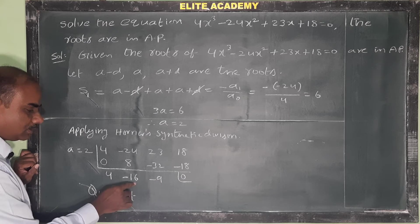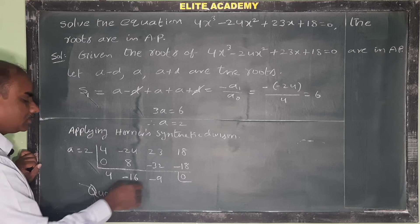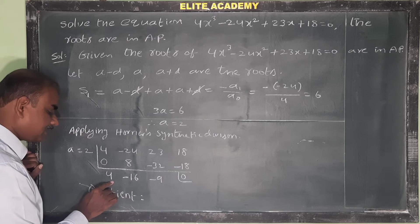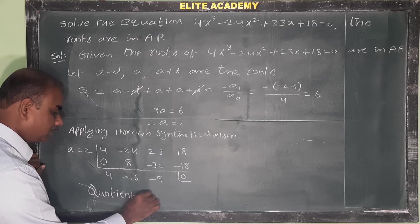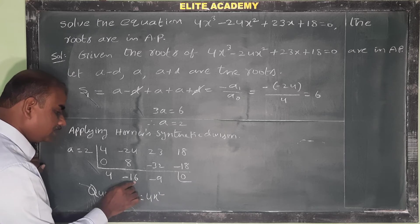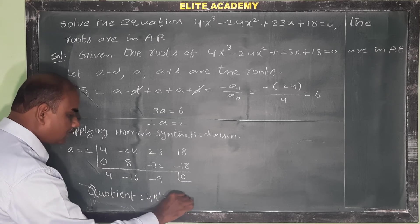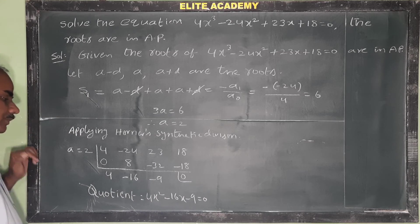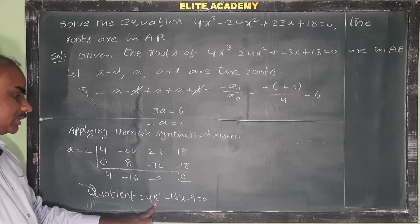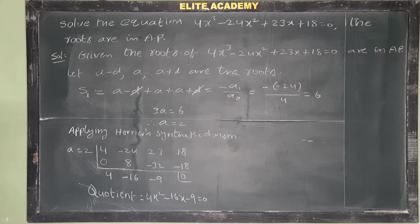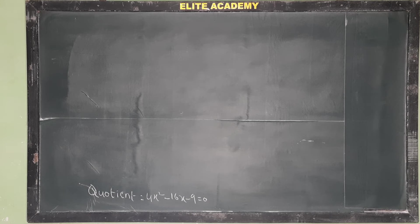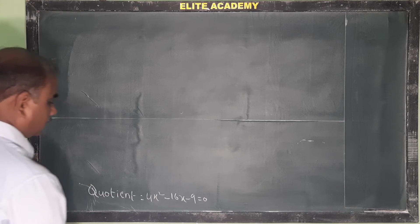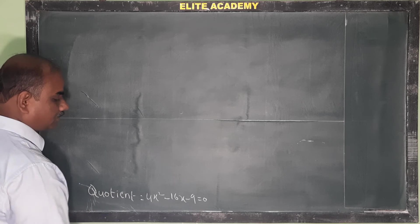The quotient from synthetic division gives the quadratic: 4x² minus 16x minus 9 equals 0. We now solve this quadratic equation to find the remaining two roots.